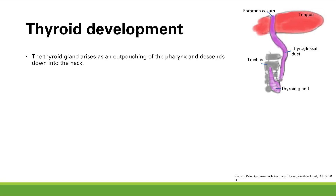On to thyroid hormone — we're going to talk about thyroid development first, a little bit of embryology. The thyroid gland arises as an outpouching of the pharynx, out at the top of the tongue at the foramen cecum. It's going to descend down into the neck along the thyroglossal duct.